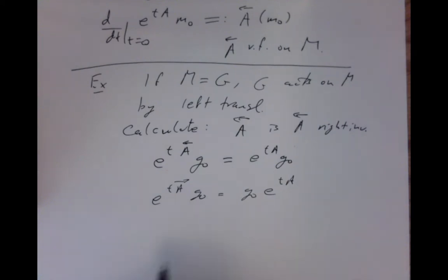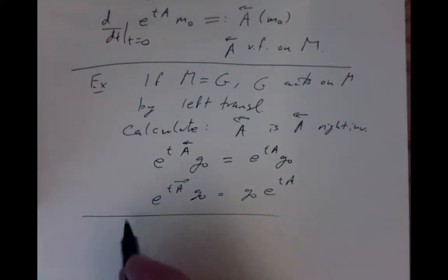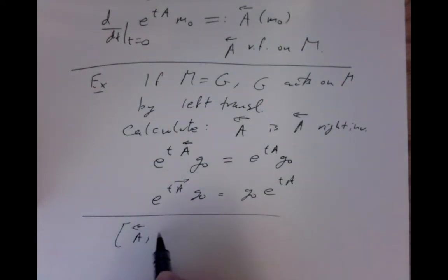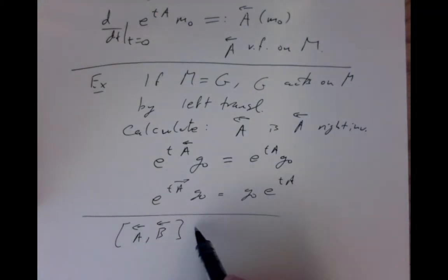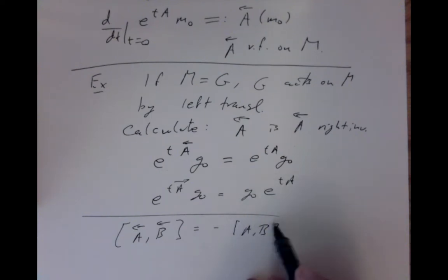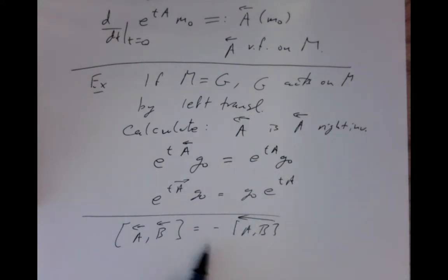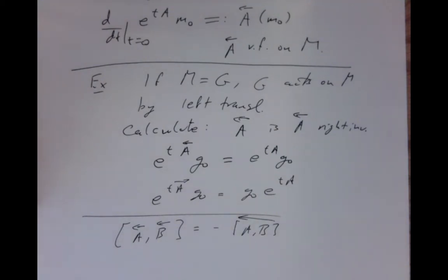This also explains why in general, not just in this example but in all examples, the bracket of vector fields on any manifold M under any group action always has a funny minus sign, which comes from being related to the right invariant rather than the left invariant story.